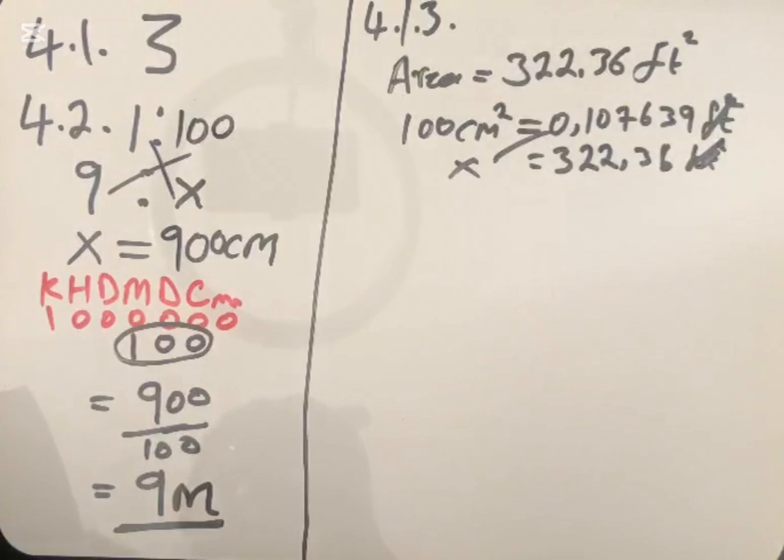The last question, 4.1.4: Sakile states that he likes an open-plan flat. Does this bachelor flat qualify as an open plan? Yes, it qualifies as an open-plan flat. The reason is that there is no wall between the living area and the kitchen, and this is what makes this bachelor flat an open-plan flat. Thank you very much for watching — see you in the next video.